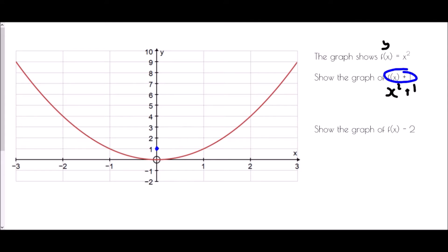If x was 1, well 1 squared is 1, and then add 1, so it would now be 2. If x was 2, well 2 squared is 4 plus 1, it's now 5. And if x was 3, 3 squared is 9 plus 1 is now 10.